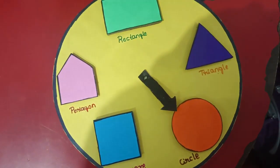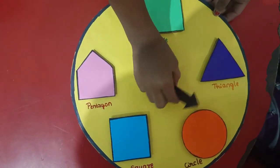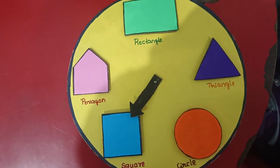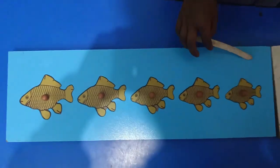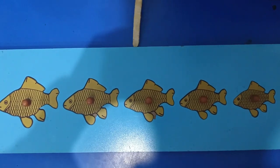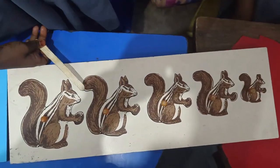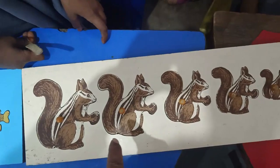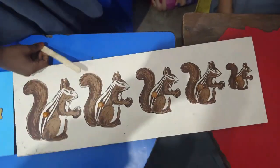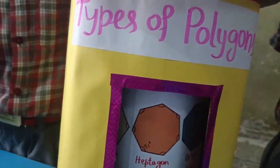What is ascending order? Ascending order means to arrange the numbers in increasing order, that is from smallest to largest. What is descending order? Descending order means to arrange the numbers in decreasing order, that is from highest to lowest.